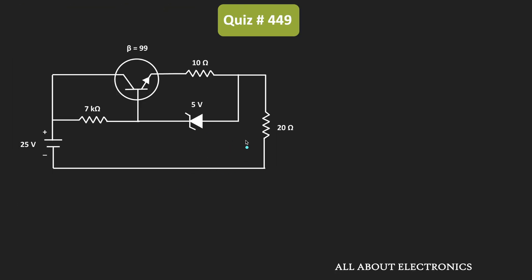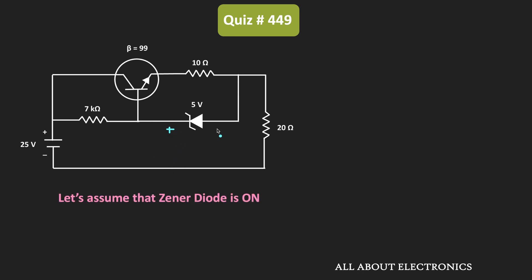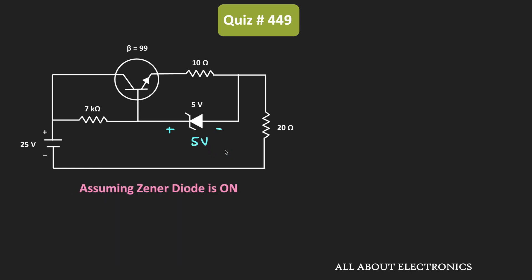To find the current through the 20 ohm resistor, first we need to determine whether this Zener diode is conducting or not. Initially, let us assume that the Zener diode is in the ON condition, meaning the voltage drop across this Zener diode is equal to 5V. Assuming this, let us find the current through the 20 ohm resistor.